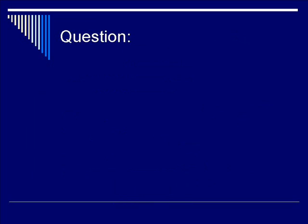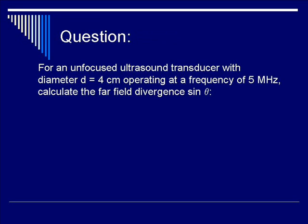Let's do a question. For an unfocused ultrasound transducer with diameter D equals 4 centimeters operating at a frequency of 5 megahertz, let's calculate the far field divergence, sine theta. Utilizing the equation sine theta equals 1.2 lambda over D, is the answer A: 0.009? B: 155.8? C: 0.09? Or D: 0.15? Let's pause the video to work out your response.